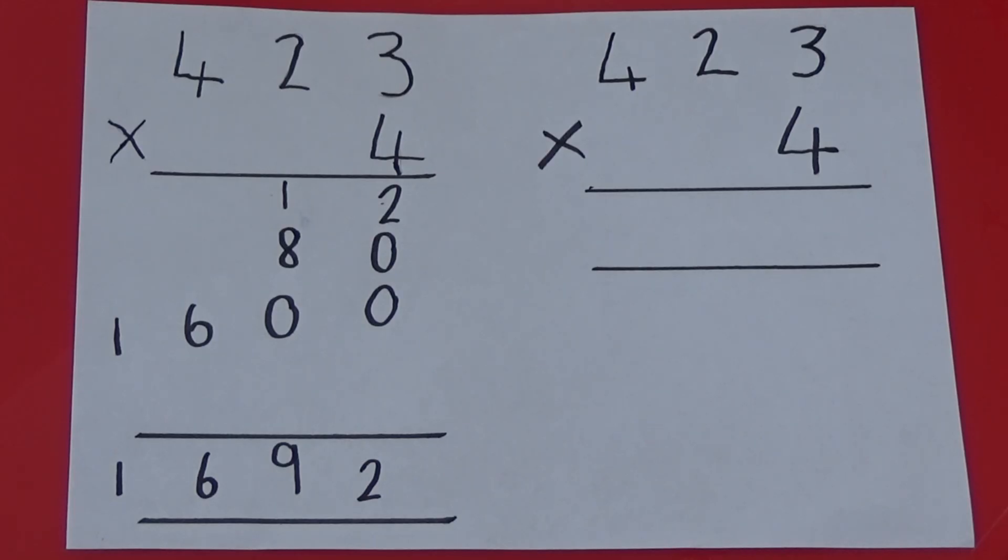With compact method, we do exactly the same as we do with expanded method, but we don't write down every step in full. As before, we start by multiplying the ones.